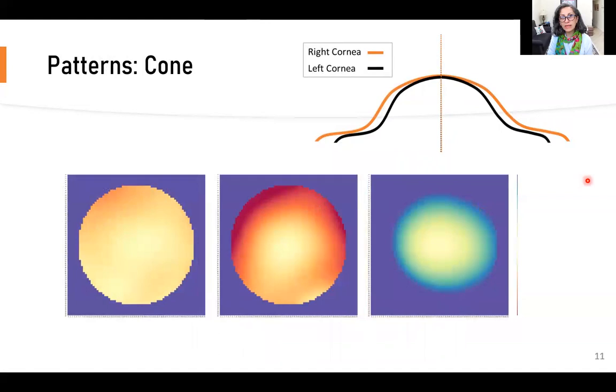The next pattern is what I named cone. In these cases, one cornea is steeper than the other and the gap between them increases as we move from the center to the periphery. This is a pattern we'd expect to see in central keratoconus.